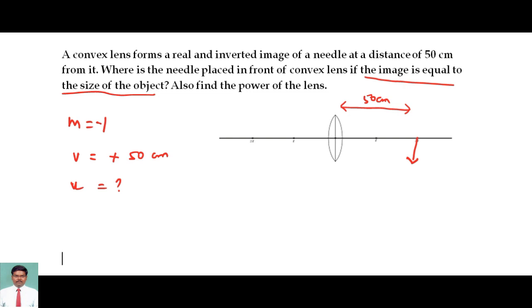M is equal to V by U. So U can be written as V by M, which is equal to 50 divided by minus 1, which equals minus 50 cm. So the value of U is equal to minus 50 cm.